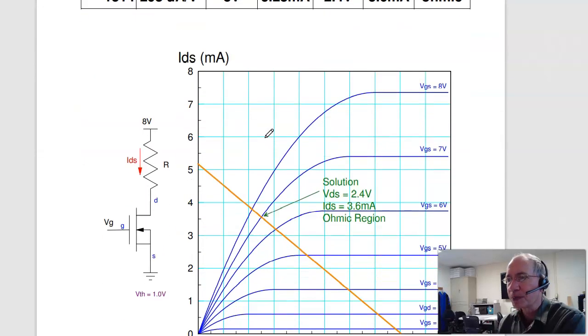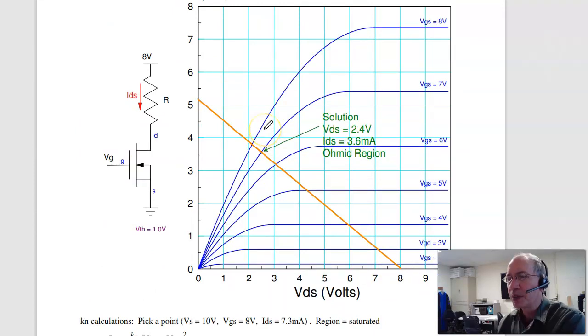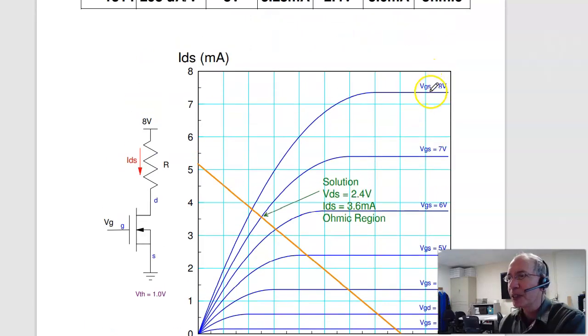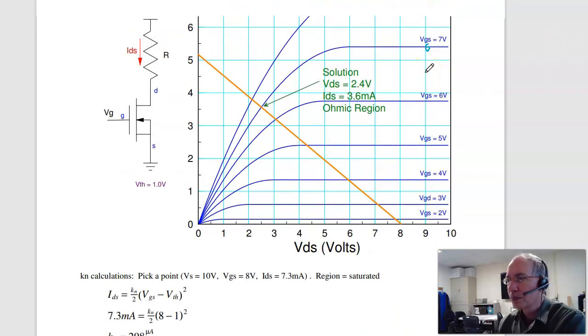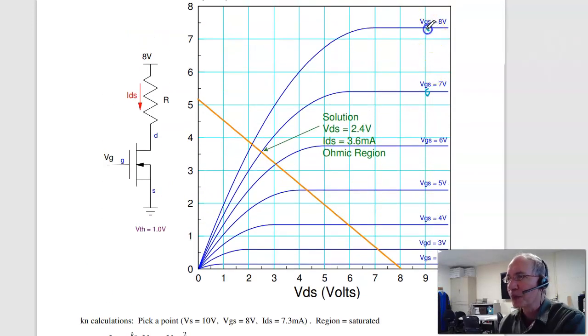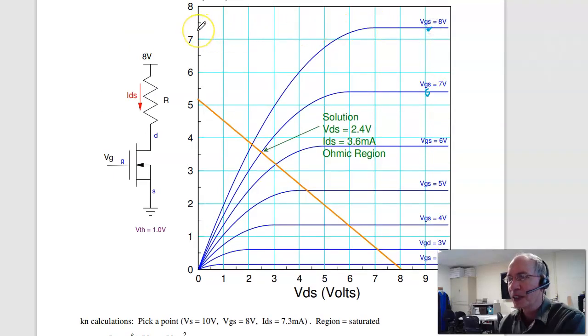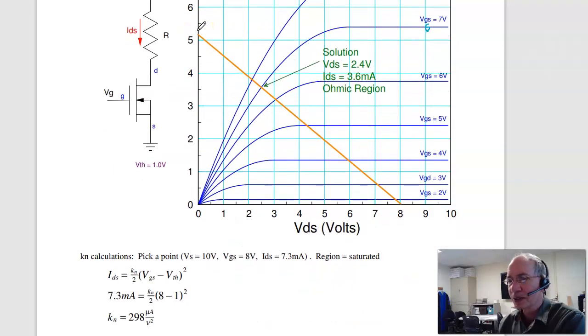Problem 9. Determine K sub n, draw the load line, and find the operating point when Vg is 7 volts. To find K sub n, pick a point. Here I chose a point like right here. Yeah, I picked a point right here. When Vg is 8 volts, I'm getting 7.3 milliamps. The threshold voltage is about 1 volt, it's less than 2. So for K sub n, I get 298 microamps per volt squared.